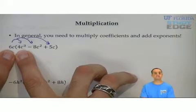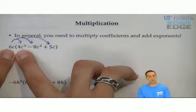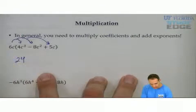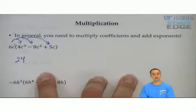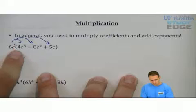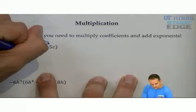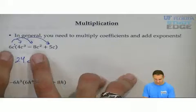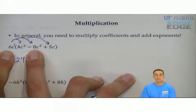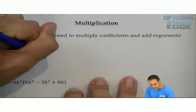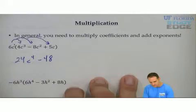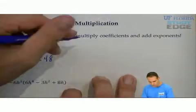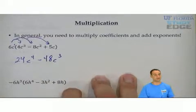6c times 4c cubed: 6 times 4 is 24. Remember, c is c to the first power, so 1 plus 3 gives you c to the fourth power. Next, 6 times negative 8 is negative 48. c to the first times c squared: 1 plus 2 gives you c to the third power.